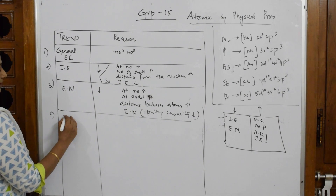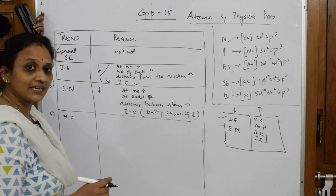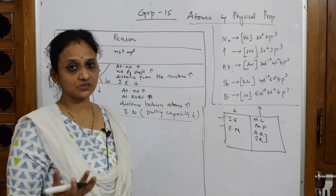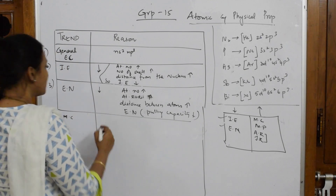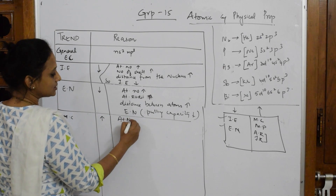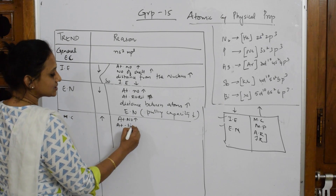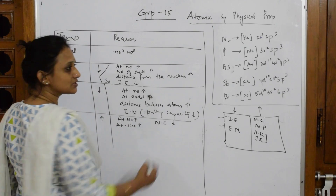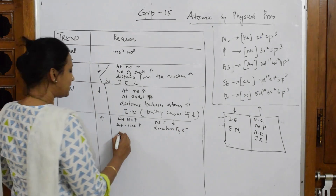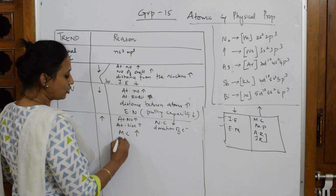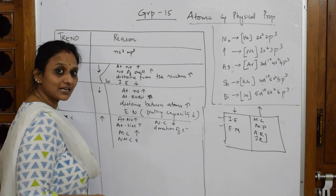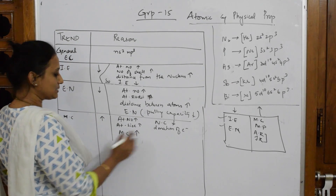Metallic character is basically the ability to donate electrons — metals are lustrous in nature because of excitation of electrons. Metallic character increases down the group. As atomic number increases, atomic size increases; when atomic size increases, nuclear charge effect decreases; when it is easier to donate electrons, metallic character increases down the group — and correspondingly, non-metallic character decreases.